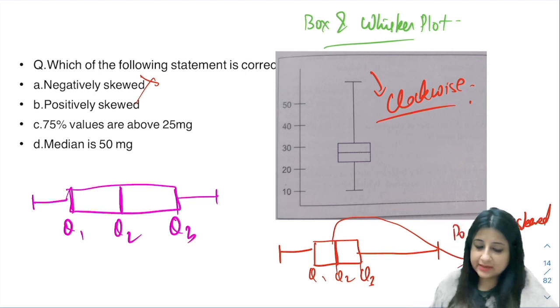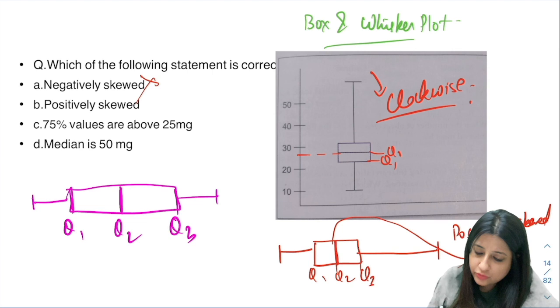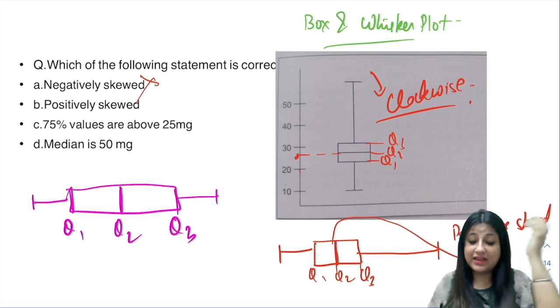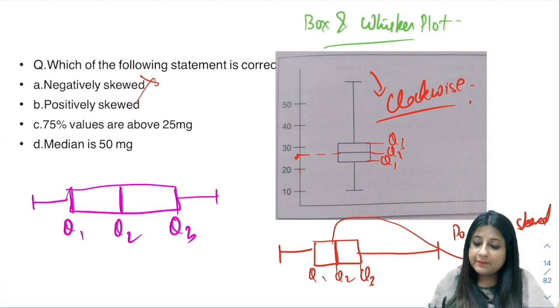Now where is the median? You all know this is Q1, Q2, Q3. Where is the median going to come? Somewhere between 20 to 30, let's say 25. So median Q2 is at 25.